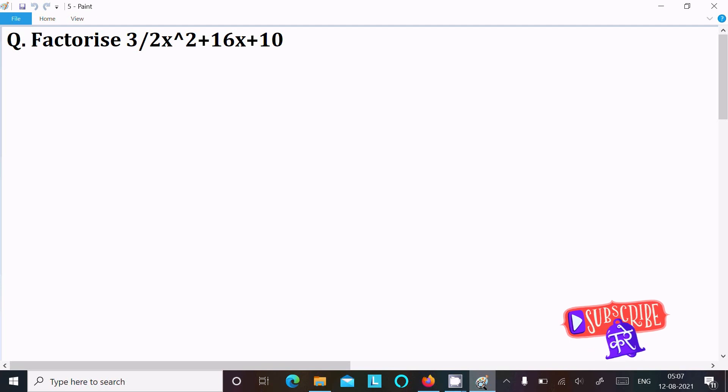Factorize 3/2x² + 16x + 10. Let's see the answer. Writing here the given 3/2x² plus 16x plus 10. So here 1 is hidden, write 1. Now 2 and 1, assume that comes 2.